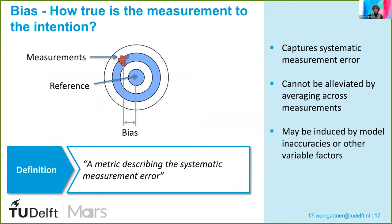Bias can be defined as a metric that describes the systematic measurement error. That means our measurements may have a tendency to deviate from the ground truth or the reference, and this tendency is captured by bias. The tendency usually remains the same across replicates, and therefore this measurement error cannot be alleviated by averaging across measurements. Even though it may remain the same across replicates, the bias is not always constant — it often results from model inaccuracies or other confounding factors, and therefore may change with experimental conditions or acquisition parameters.